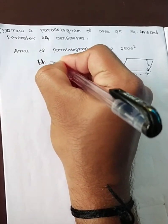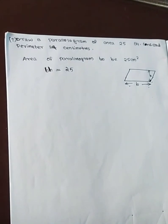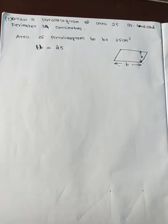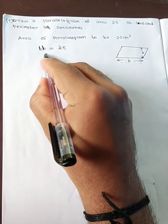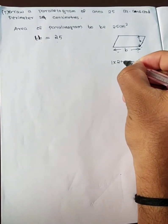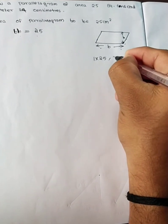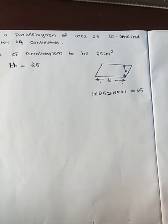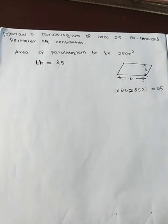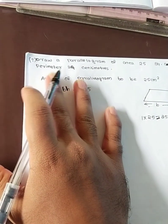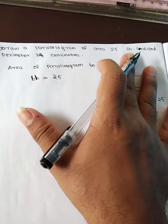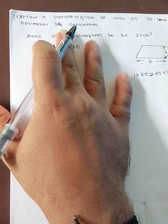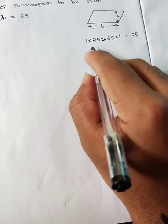Okay, H is equal to... 25. The area is 25. The perimeter is 24. That is what the distance would be. It becomes 24. The other side is 24. The area 25 is the same, and the perimeter 24 is the same.